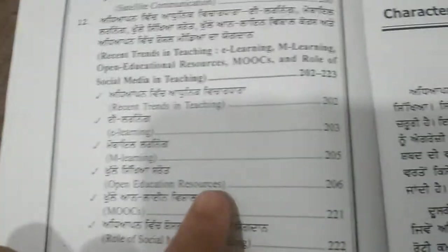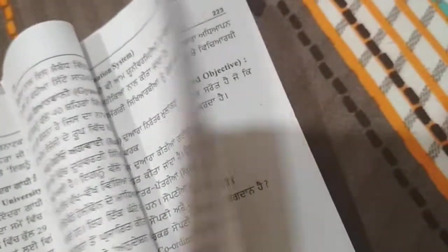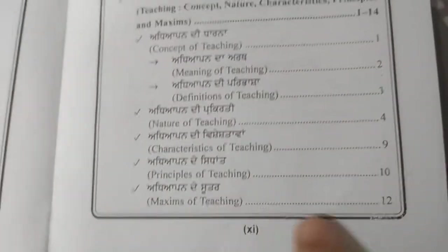You can check another topic also — for example, Open Education Resources. It's listed up to page 201. If I go to page 206, the topic Open Educational Resources is given and it runs through to page 201, then the next topic follows. From unit 1, you can also check 'Maxims of Teaching' at page 12 — go to page 12 and the topic is completely there.